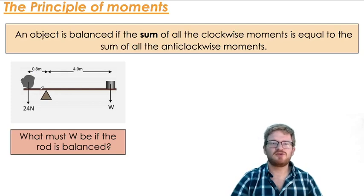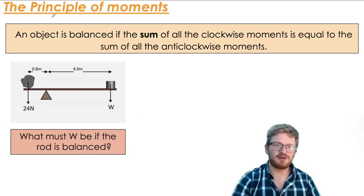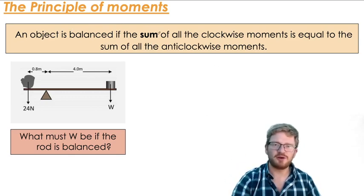So obviously we've been thinking about trying to balance things. There's an easy way of working out whether something will be balanced, and it's called the principle of moments. What we can say is that an object is balanced, in other words it won't tilt one way or the other, if the sum of all the clockwise moments is equal to the sum of all the anticlockwise moments.